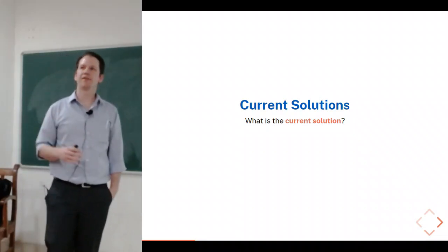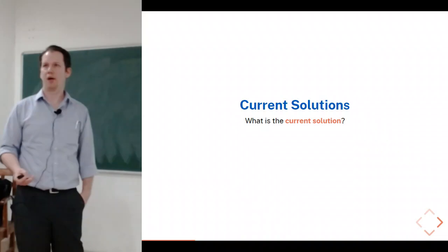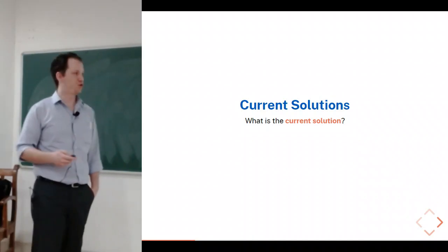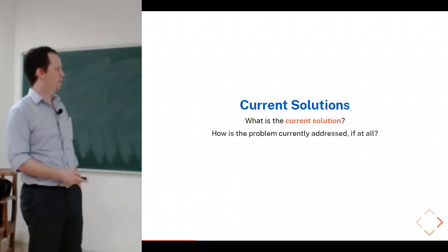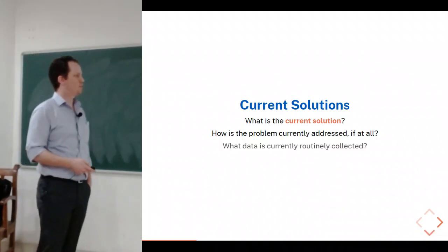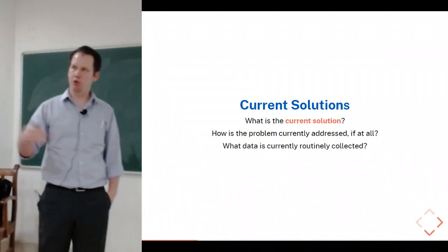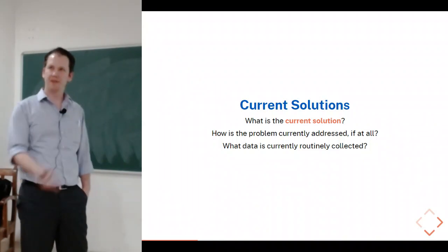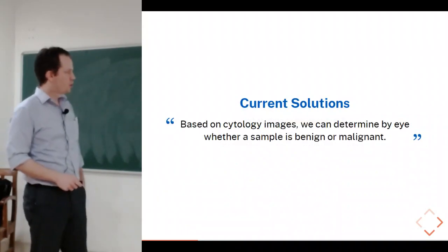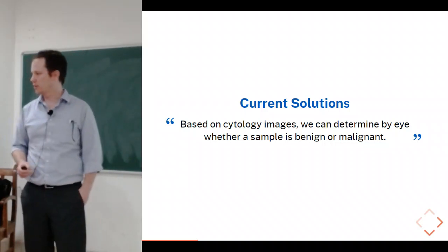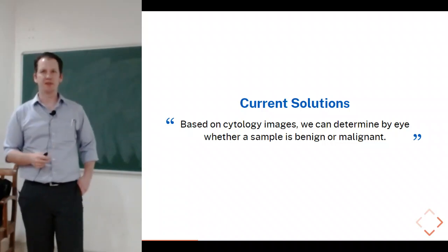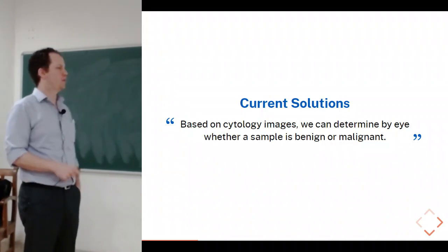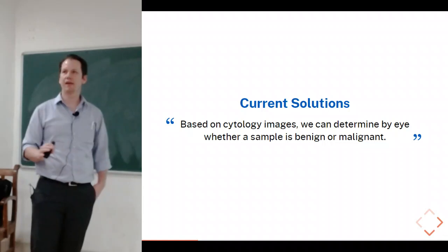The next thing is a literature search or review. What are the current solutions to the problem people have already tried? There must be some who've tried to address it from an engineering or economic standpoint. How is it being addressed, and what data is currently routinely collected? It's far easier to work with data that is automatically or continuously generated than to build a dataset from scratch. For cytology, pathologists currently have to sit down in front of a microscope and look at each slide — that's our starting point.